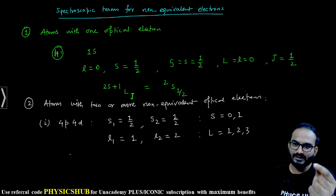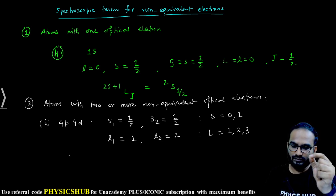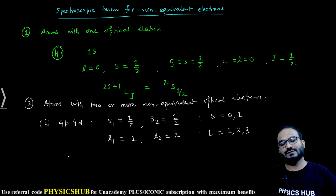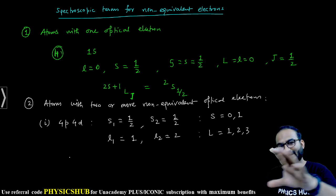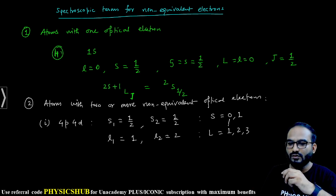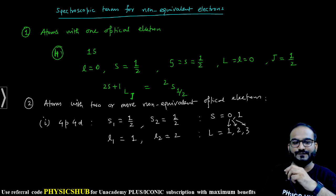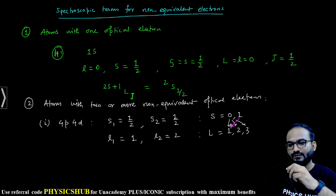There is no restriction here, unlike the previous case for equivalent electrons from the same subshell, where even S only combines with even L or odd S only with odd L. For non-equivalent electrons there is no restriction — even S can combine with odd L or even L. So S=1 can combine with L=1, 2, or 3, and S=0 can combine with L=1, 2, and 3 as well.